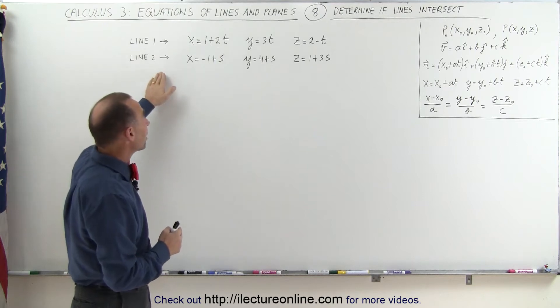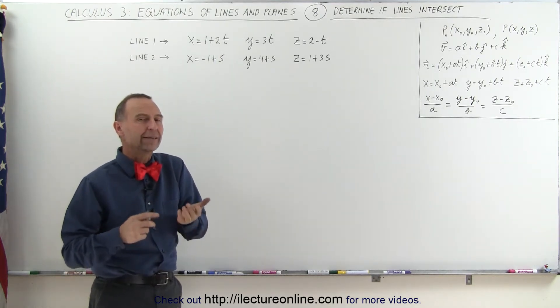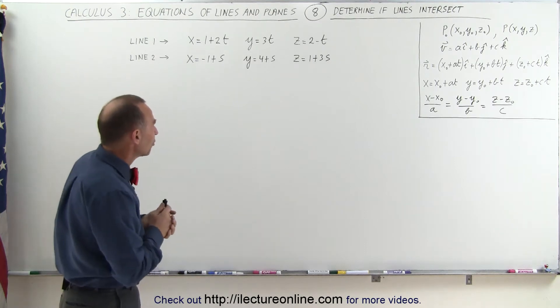We're given the three parametric equations for each of the two lines. Now, how do we determine whether or not they intersect?